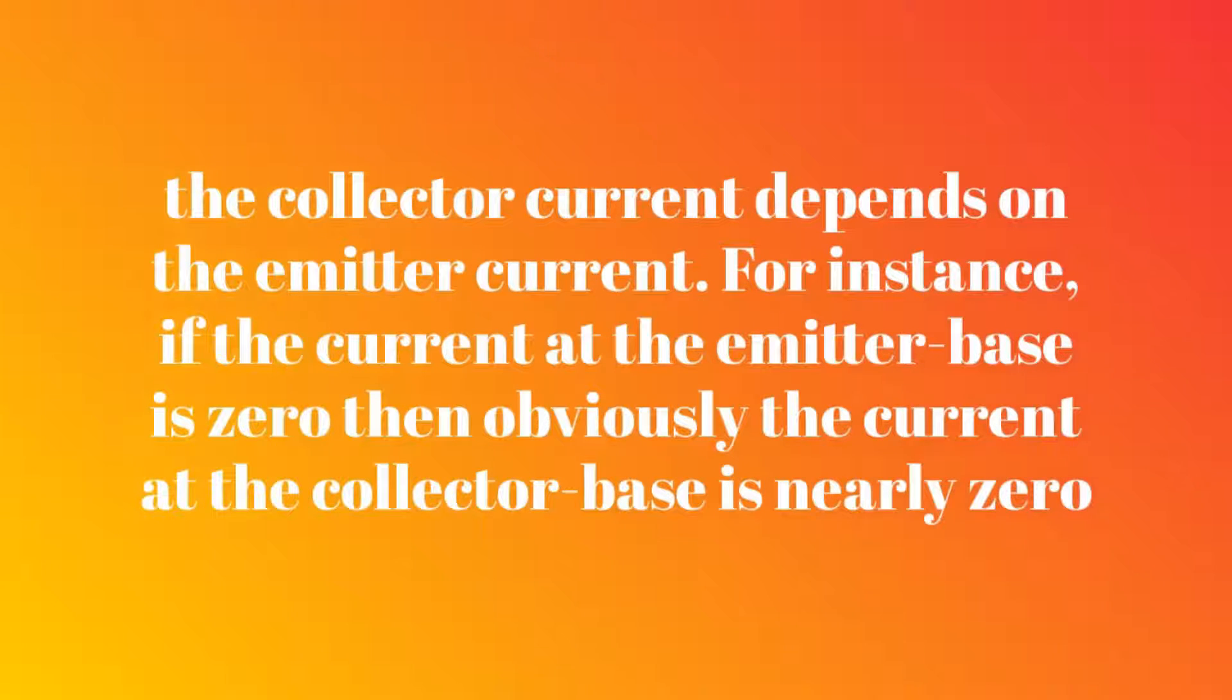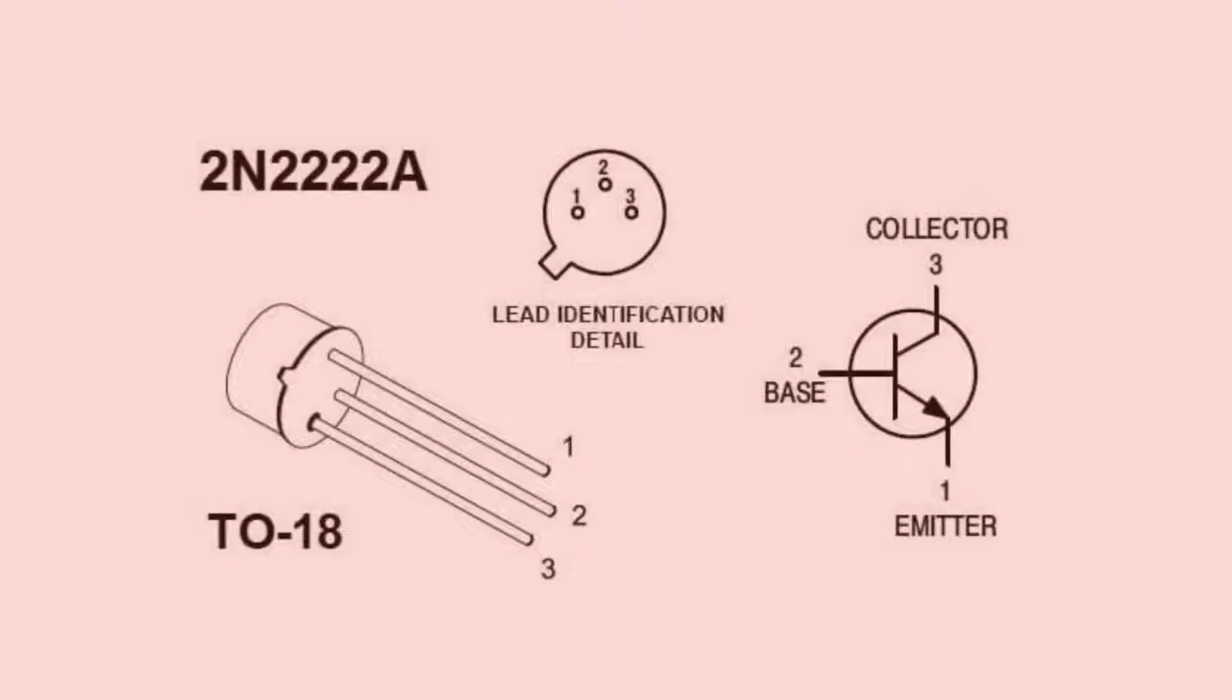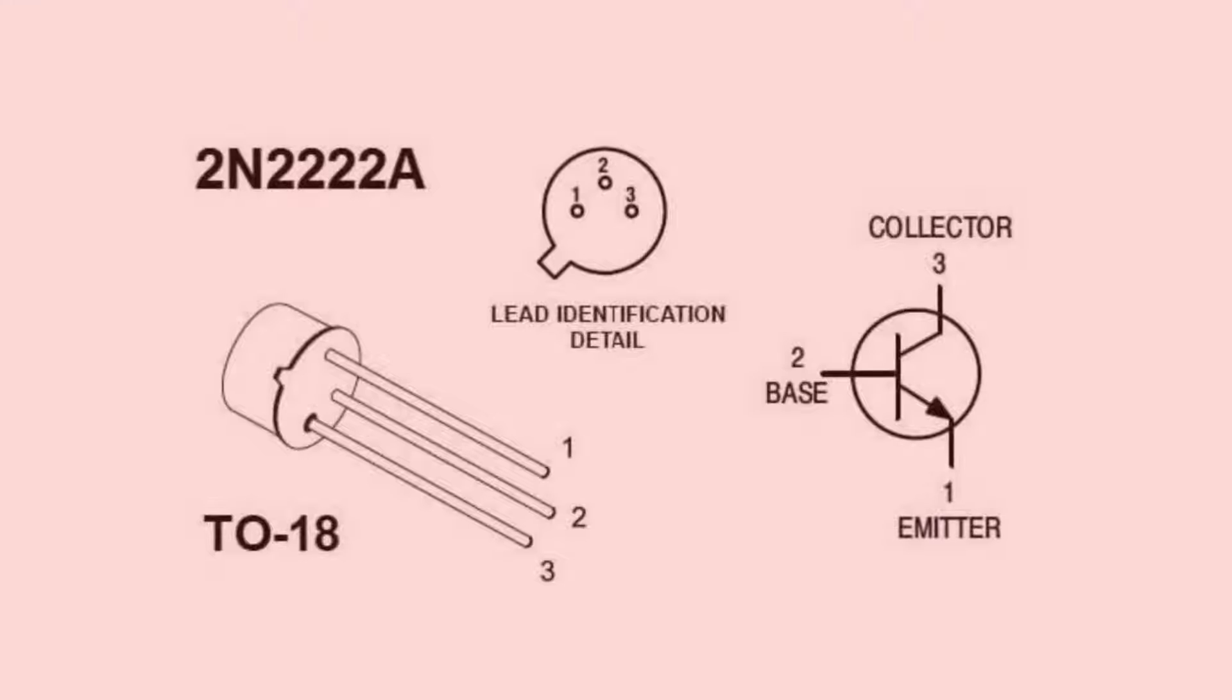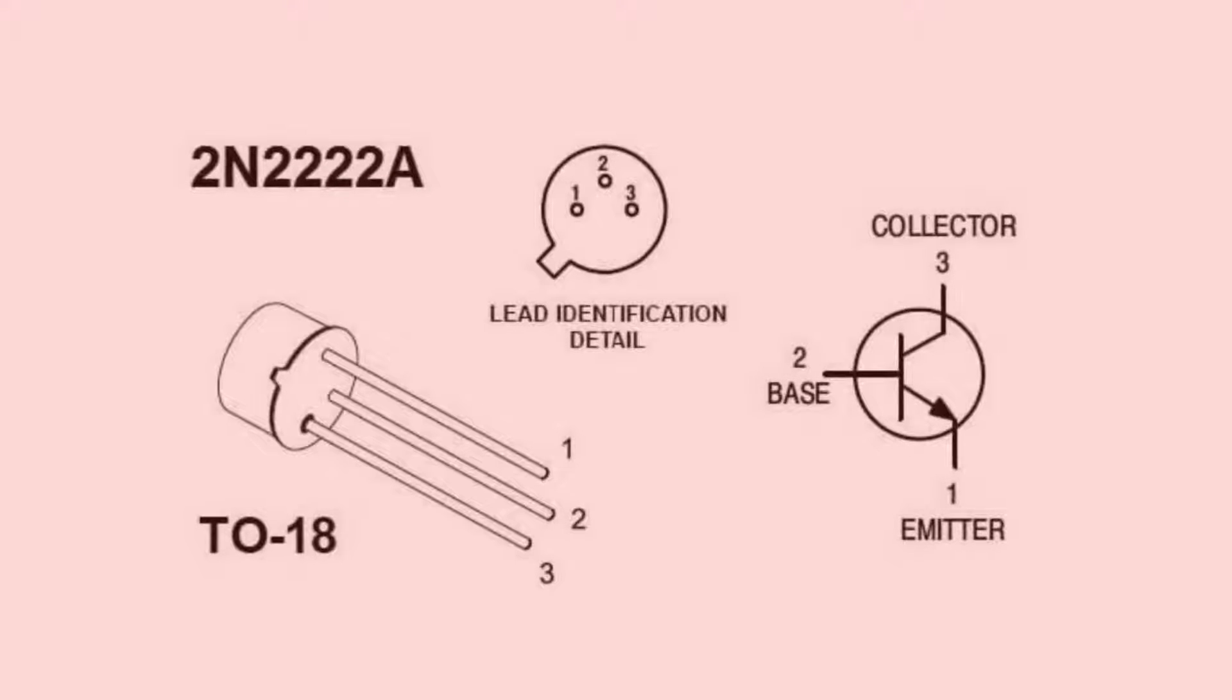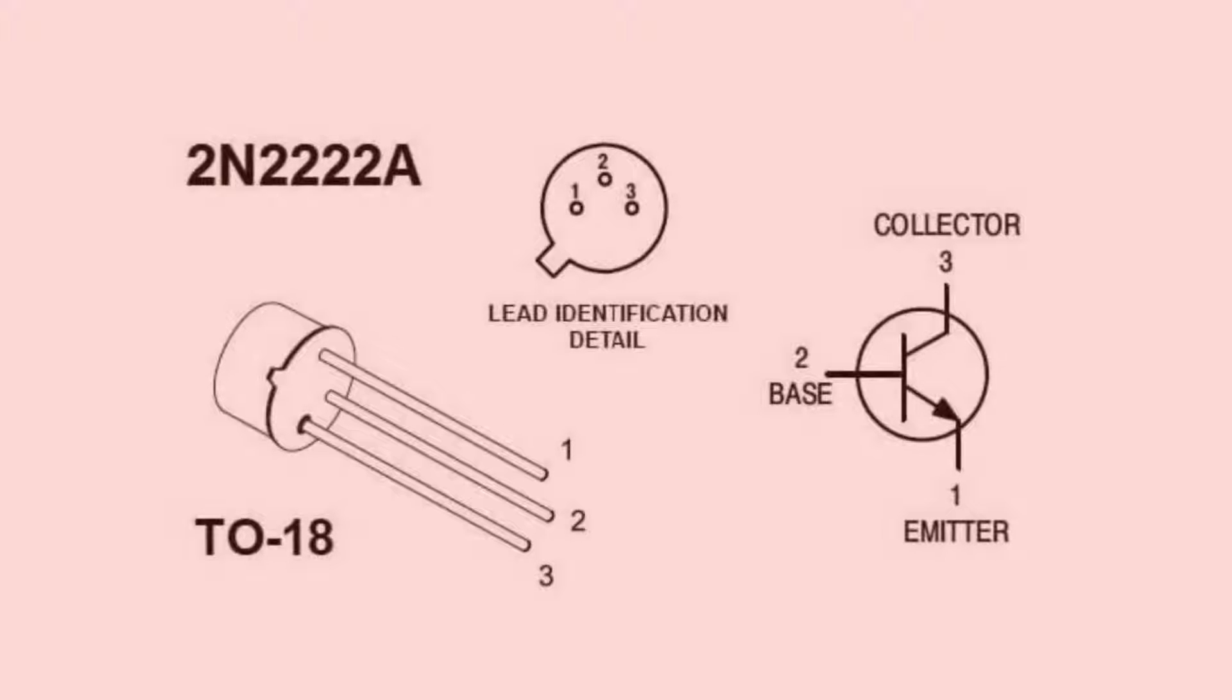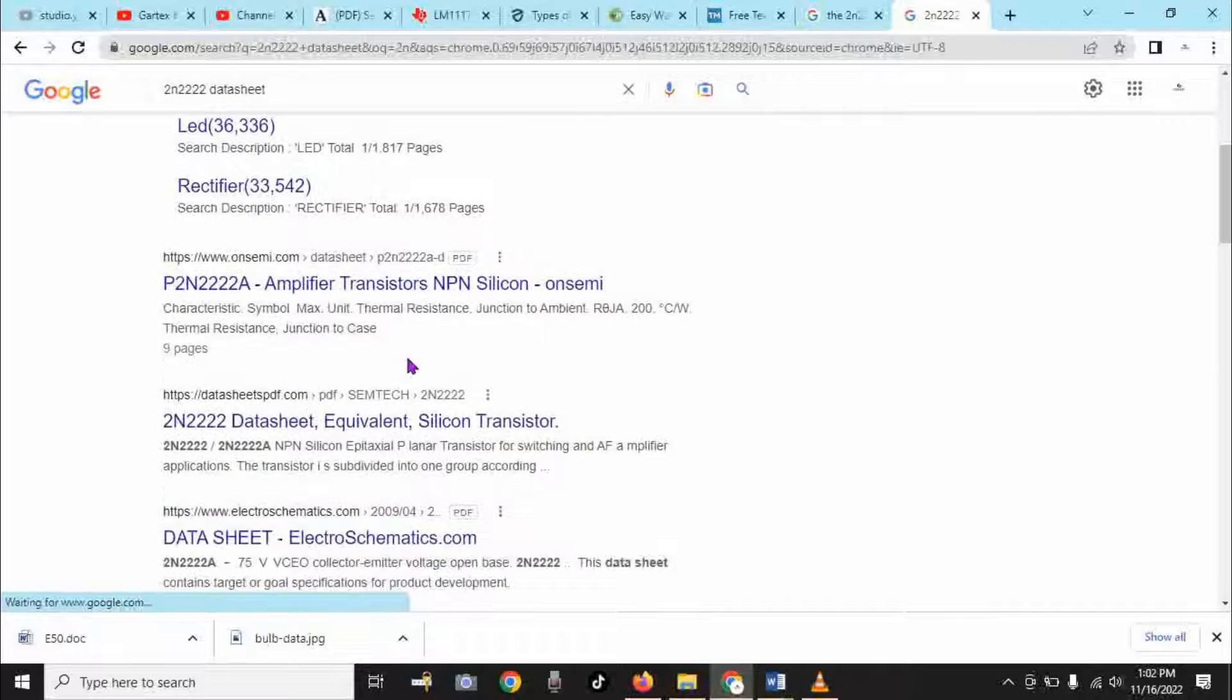In our project today, we shall start by choosing the NPN transistor we are going to use. We are going to use the 2N2222 transistor, which is basically an NPN transistor. From our previous tutorials, we said that it is always a good practice to check the datasheet of electronic components before using them. We now search for 2N2222 on the internet. I am now downloading this 2N2222 datasheet.